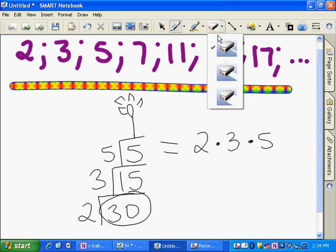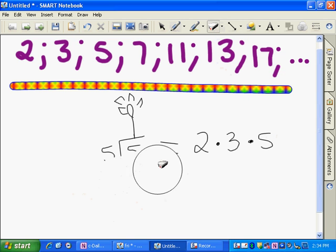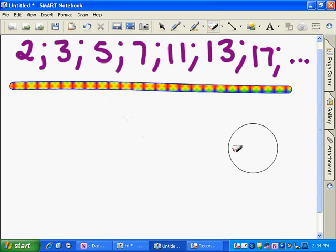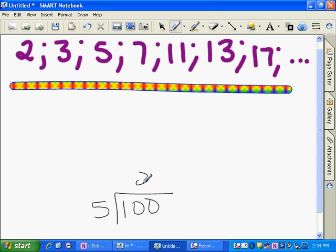So let's try, let's use this method to find the prime factorization of another number. Let's do 100. A prime factor of 100, let's go with five. Five goes into 100 20 times.